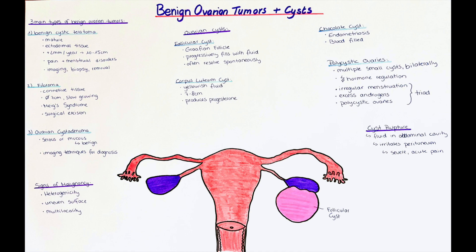The next type is the granulosa theca lutein cyst. This cyst forms usually after the administration of ovulation-inducing medications used for in vitro fertilization. It can grow as large as 20 cm, but usually resolves after the hormone administration is stopped.